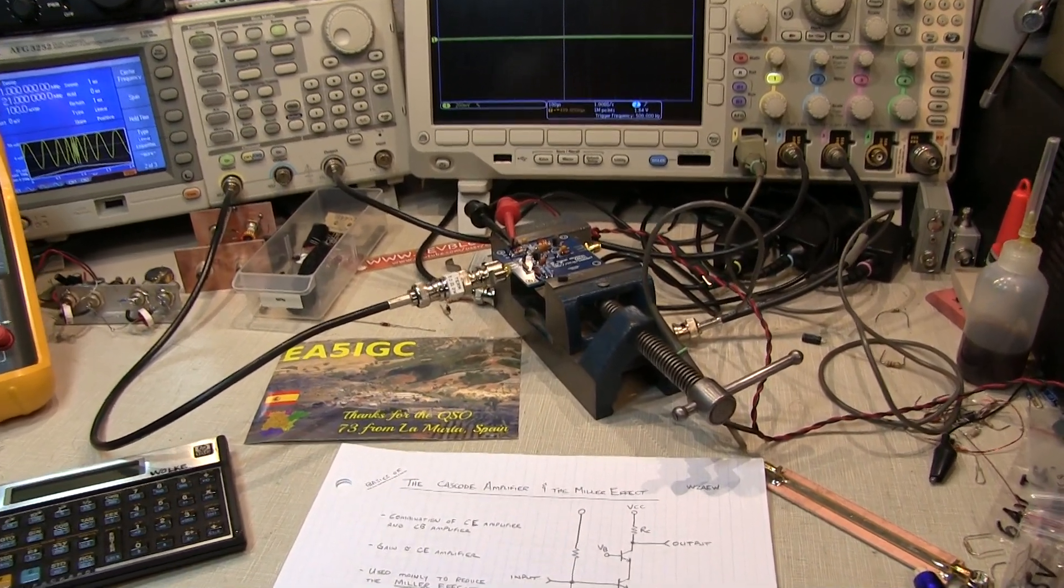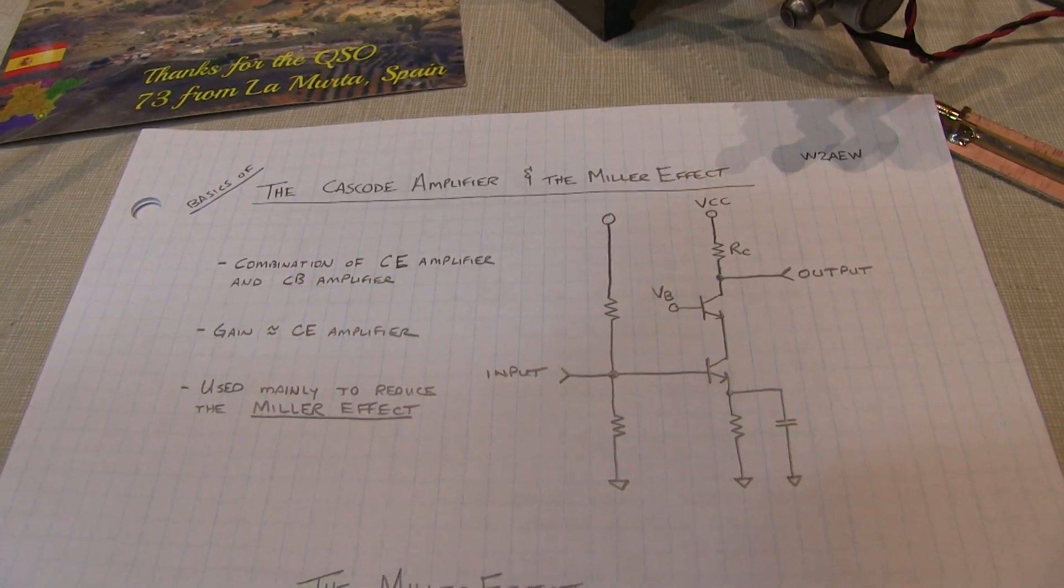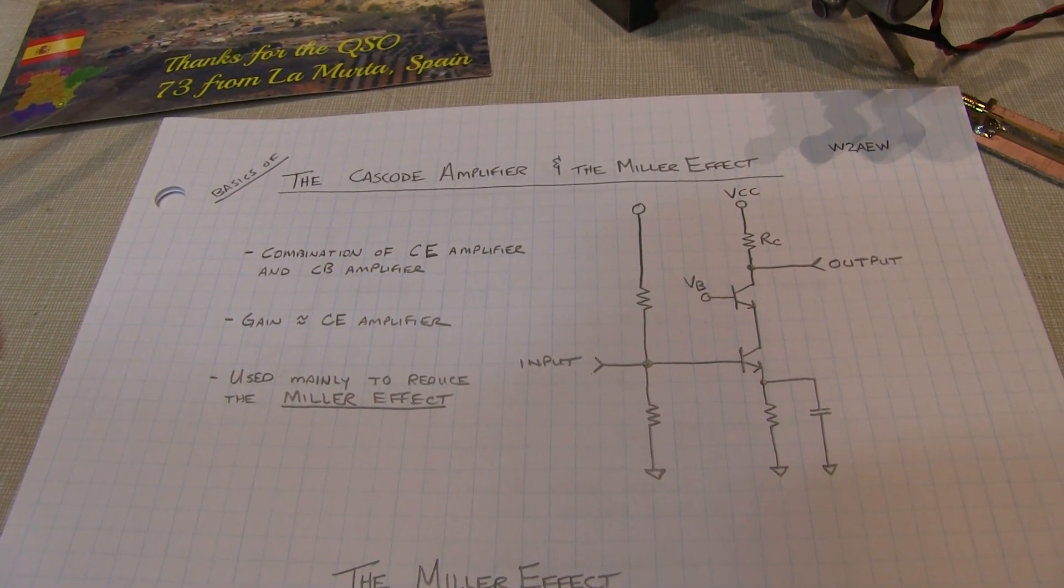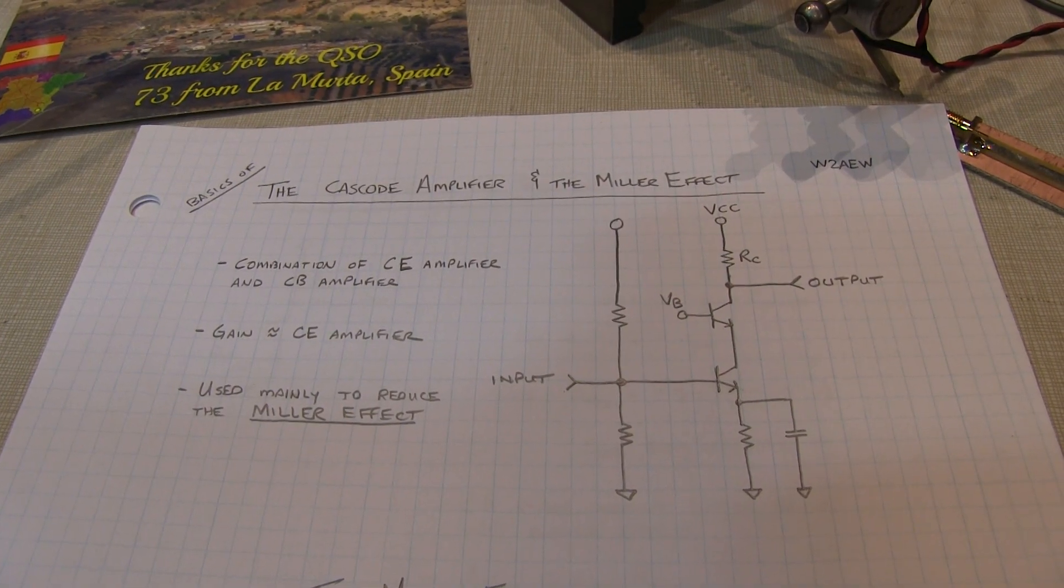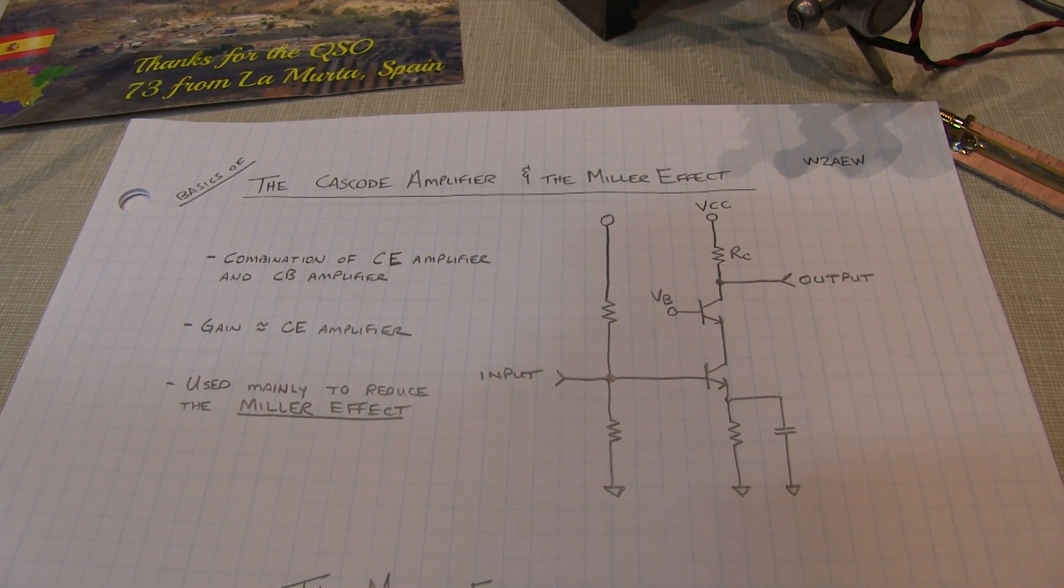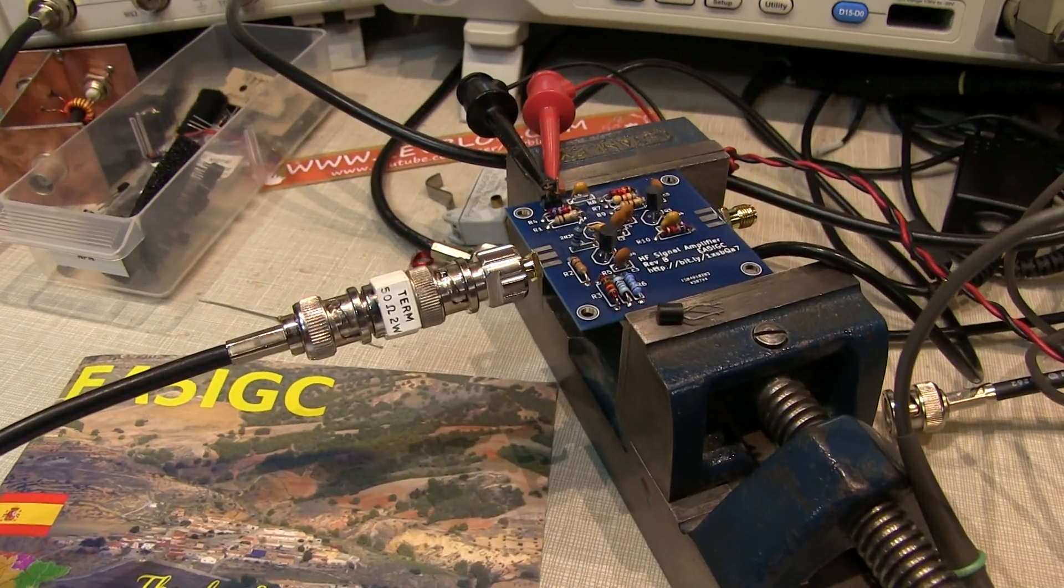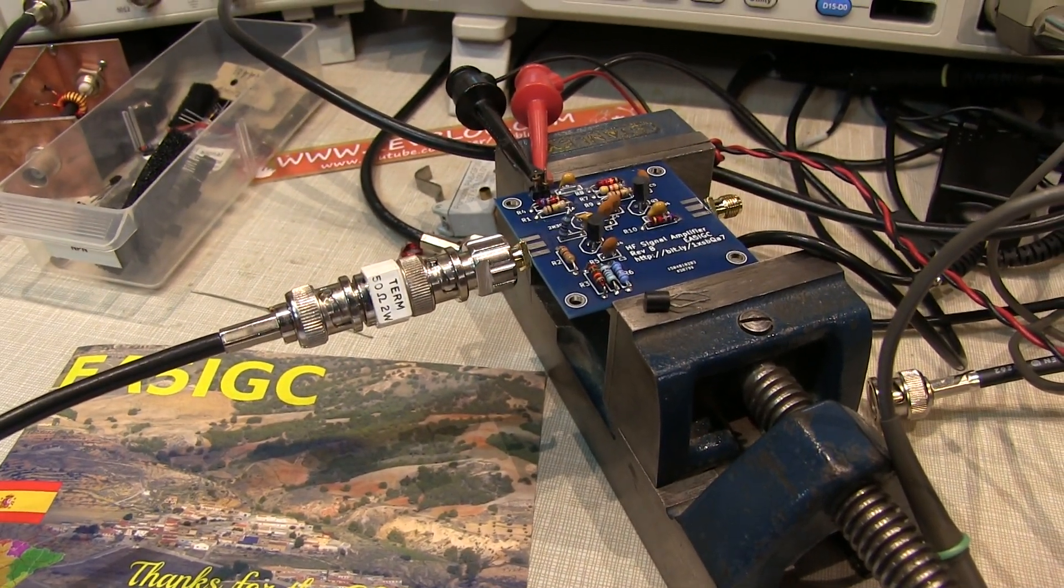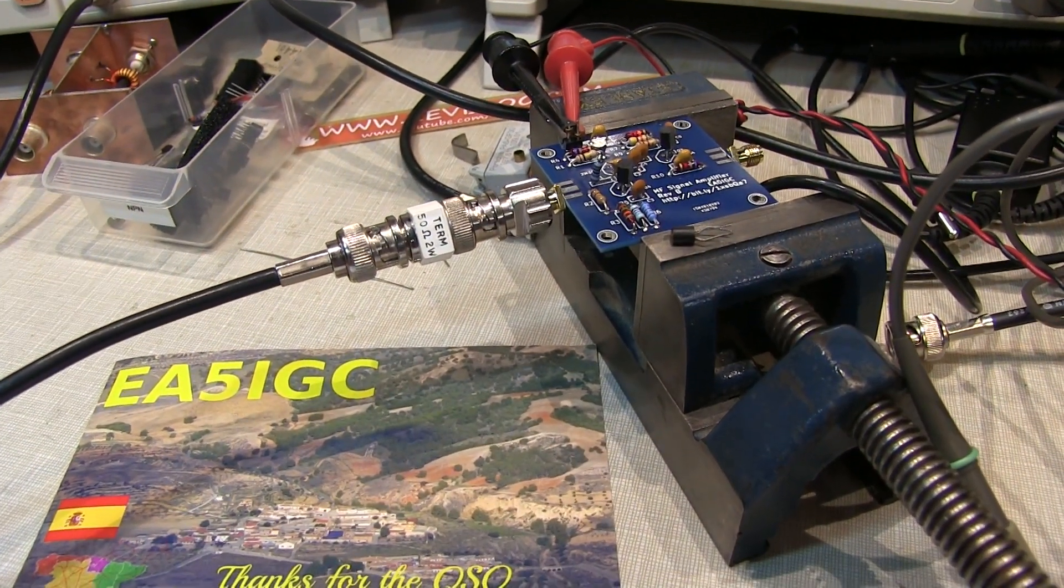In today's video, we're going to cover the basics of the Cascode amplifier and the Miller effect. We'll describe what the Cascode amplifier is, what the Miller effect is, and how the Cascode amplifier can help you deal with the Miller effect. And we'll make a couple of quick measurements using the actual Cascode amplifier circuit board here that my friend Marcus, EA5IGC, sent to me.